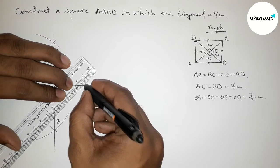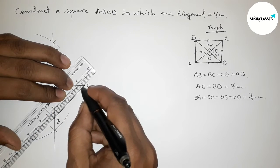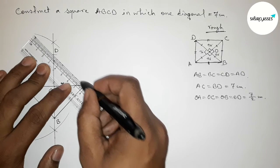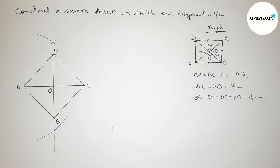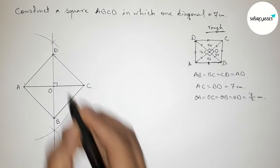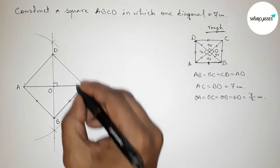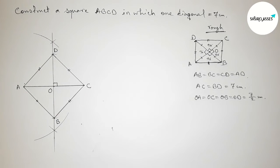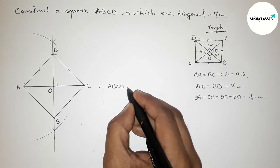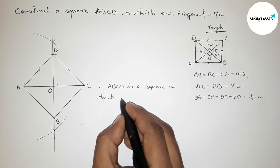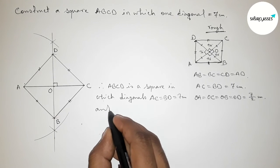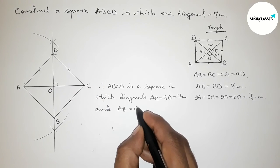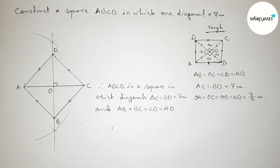Then joining side CD, and last joining side AD to complete square ABCD. All angles are 90 degrees and all sides of the square are equal. Therefore ABCD is a square in which the two diagonals AC equals BD equals 7 centimeters, and all sides are equal: AB equals BC equals CD equals AD. Thanks for watching — please share it.